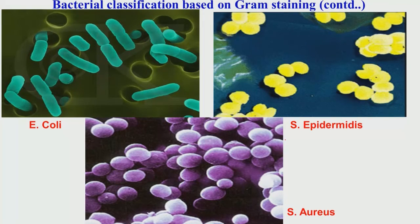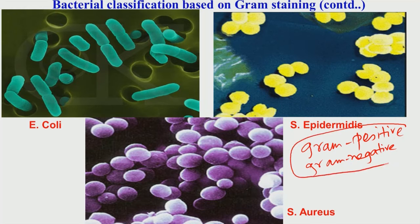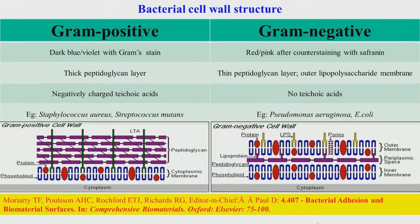Depending on gram staining, bacteria can be classified into two classes: gram positive and gram negative. These are the most widely used classifications in microbiology. Examples of gram-negative bacteria include E. coli, while examples of gram-positive bacteria include Staphylococcus aureus and epidermidis. These stain differently from E. coli and also differ in shape from the staphylococcus species.